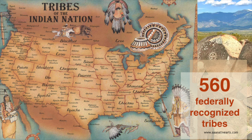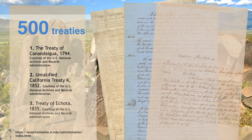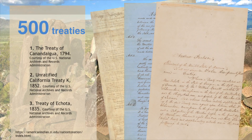Federally recognized tribes have a legal relationship with the U.S. government and its agencies unlike that of any other group of Americans. This relationship is based on the recognition of tribes as sovereign nations by the U.S. Constitution. The federal government also signed more than 500 treaties with Indian tribes, beginning with the first non-Native settlements until 1871. The relationship between the federal government and federally recognized tribes is political, based on their government-to-government relationship, not on the ethnicity of the Native Americans themselves.